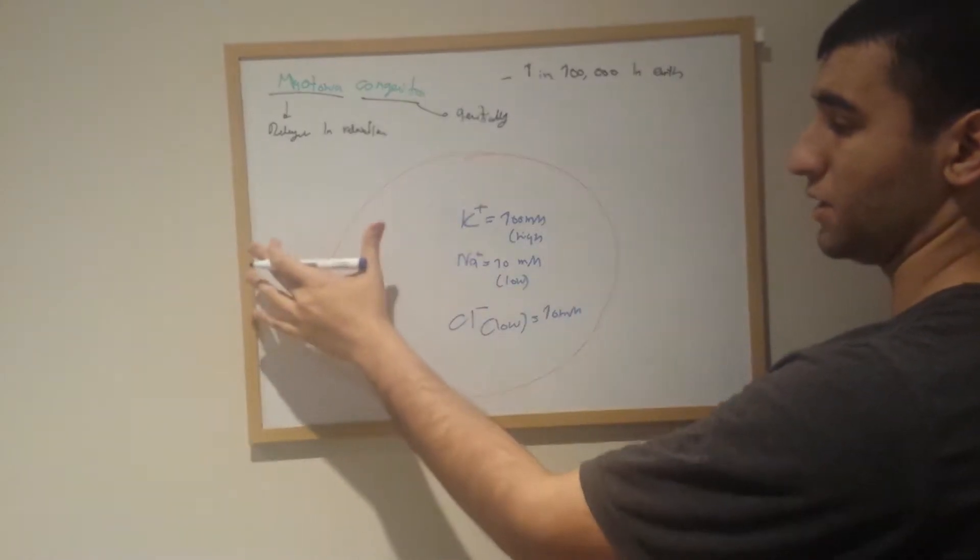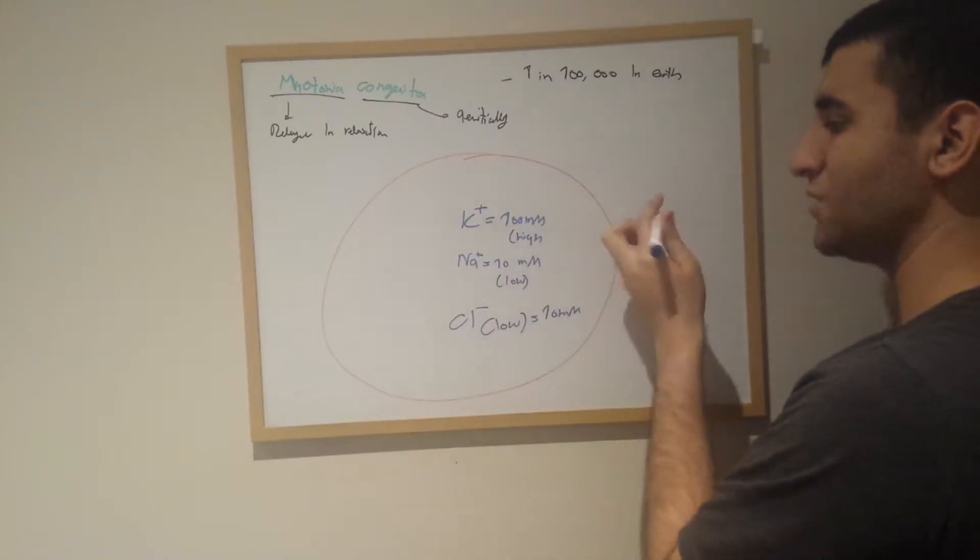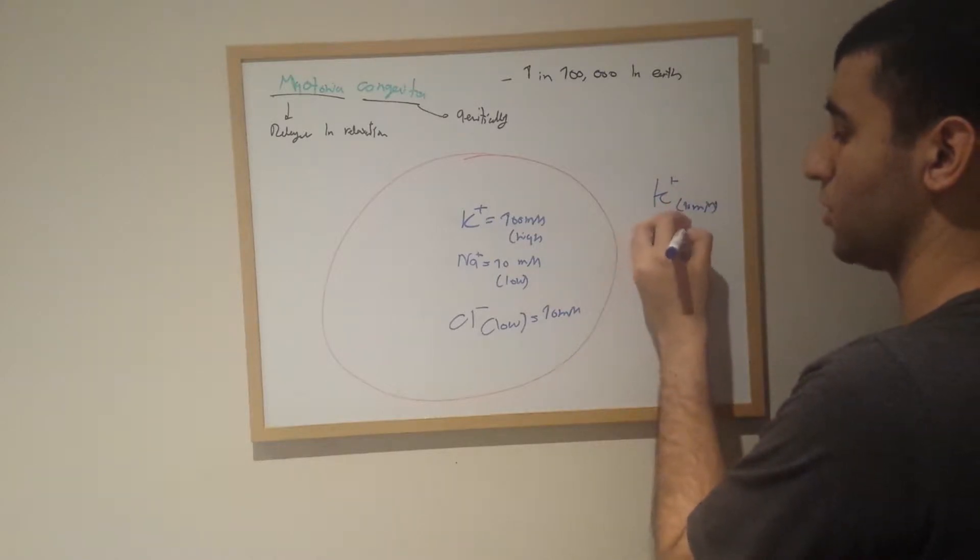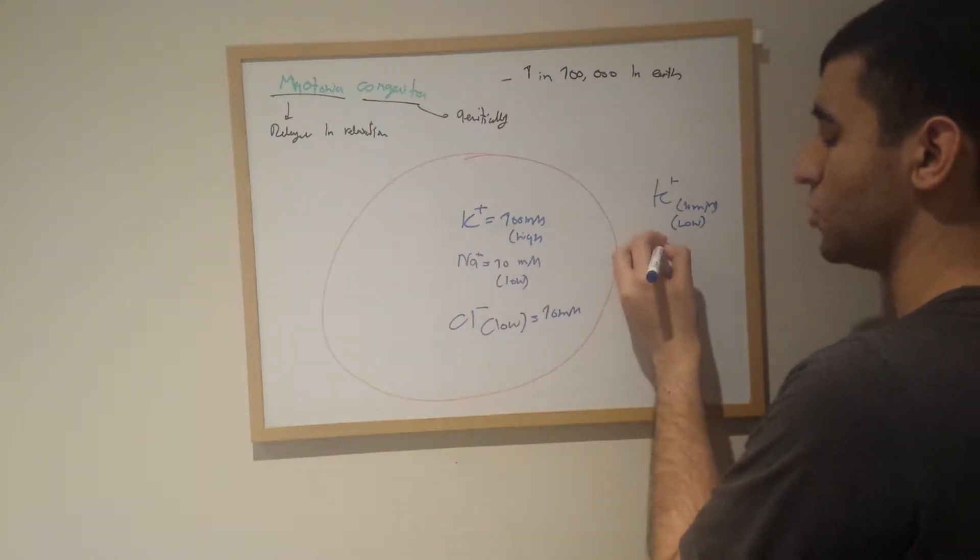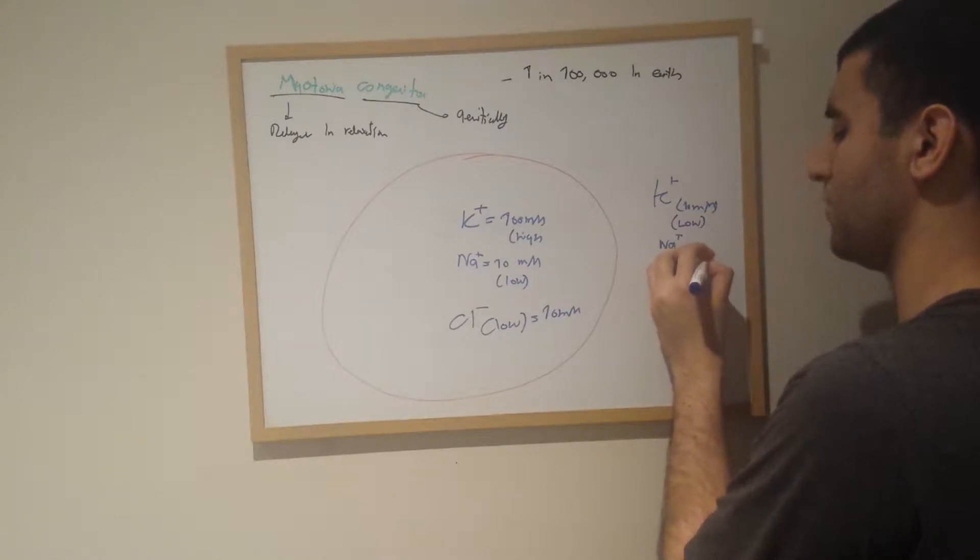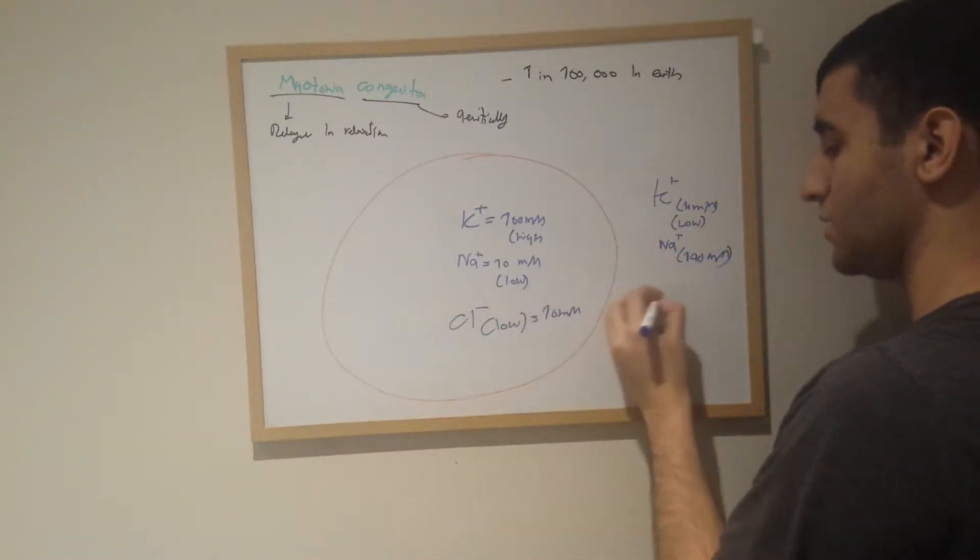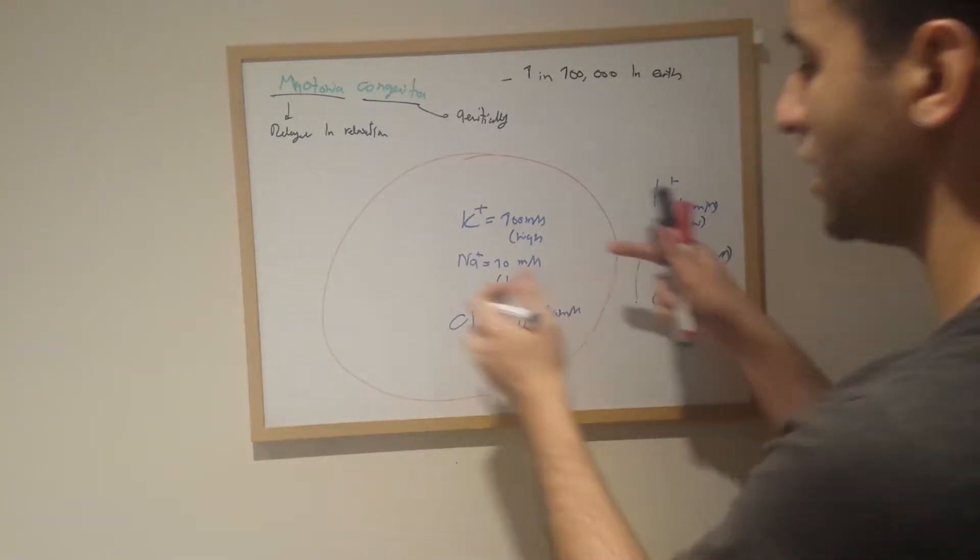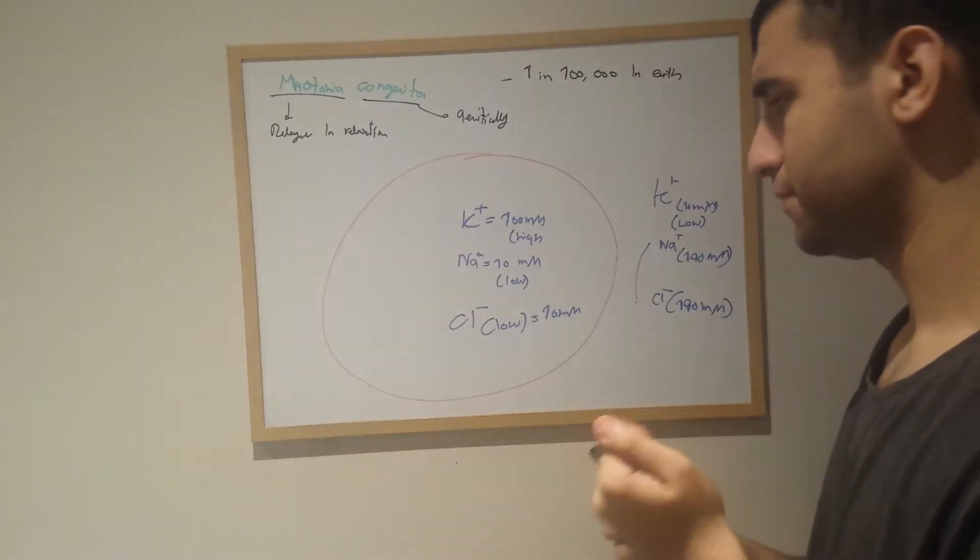The outside of the cell, potassium is low, very low, around 10 millimolar, pretty low. Sodium is pretty high, like 140 I think, pretty high. Chloride minus pretty high. So these two are very high outside; inside they're pretty low.